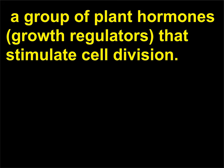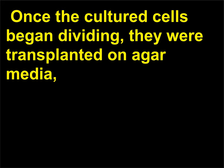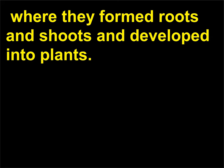Cytokinins are a group of plant hormones and growth regulators that stimulate cell division. Once the cultured cells began dividing, they were transplanted on agar media, where they formed roots and shoots and developed into plants.